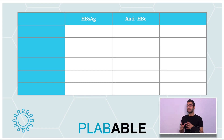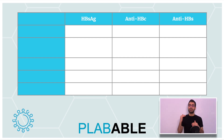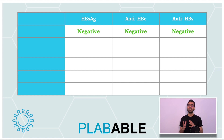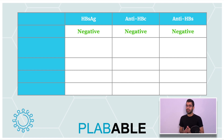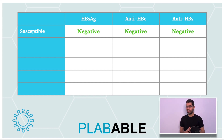Let's discuss interpretation of hepatitis B serology. We'll take into consideration three markers: HBsAg, anti-HBc, and anti-HBs. In the first row, all the markers are negative. This means the person has never had an infection and has no antibodies, so this person is susceptible to a hepatitis B infection.